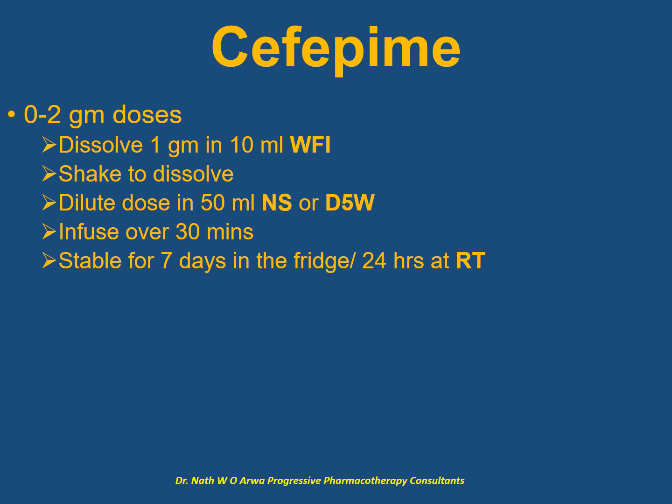For the next cephalosporin, for every 1 gram vial, use 10 ml of water for injection and shake vigorously until the powder dissolves, prior to dilution in 50 ml of compatible IV fluid — normal saline or dextrose 5%. The resultant IV solution should be infused over 30 minutes, and the stability of the final solution is 1 week in the fridge or 24 hours at room temperature.